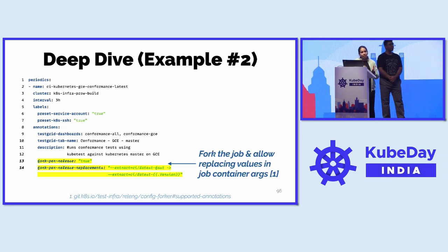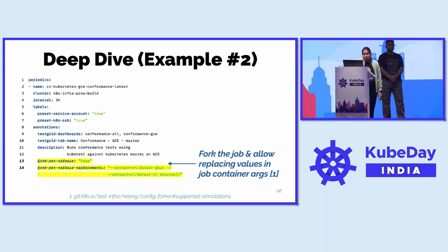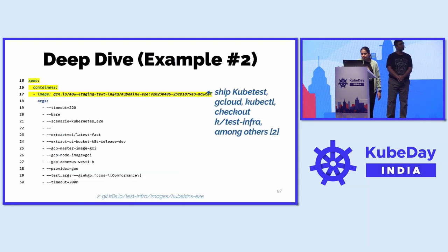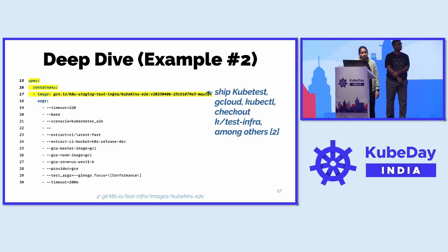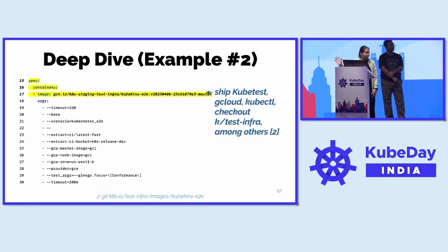Kubernetes maintains multiple minor releases and multiple patch releases for each minor release, so lines 13 and 14 say: for every release, do a fork and replace those placeholders. In the spec section, we're building this container with a new image called kubekins-e2e. This image is relevant because it ships with kubetest2 — the tool that Jason introduced — which is used to build binaries, bring up a cluster, run tests, collect logs, and bring down the cluster. It also ships with tools like gcloud and kubectl.